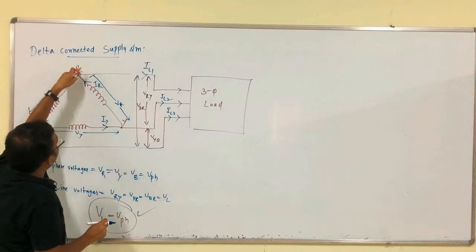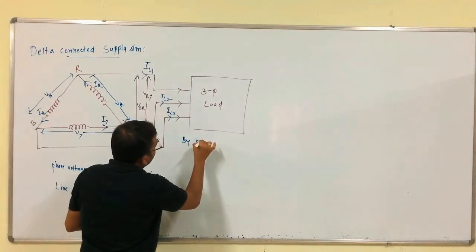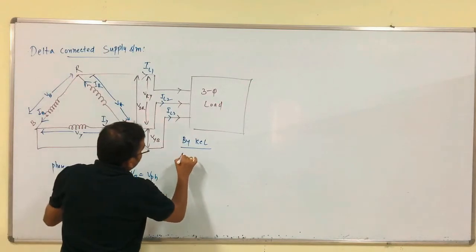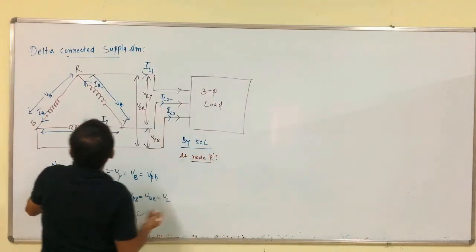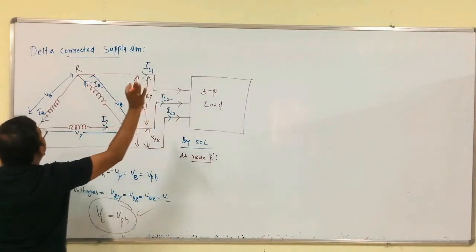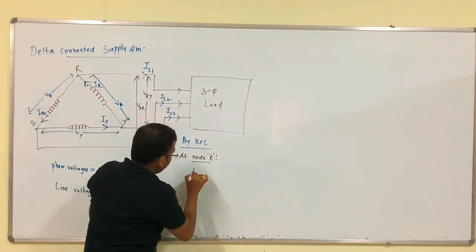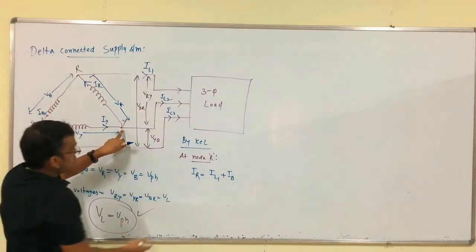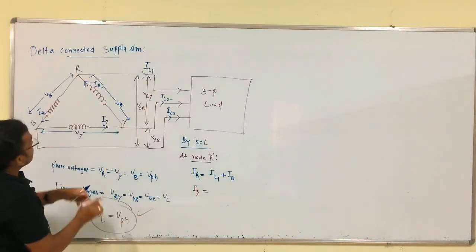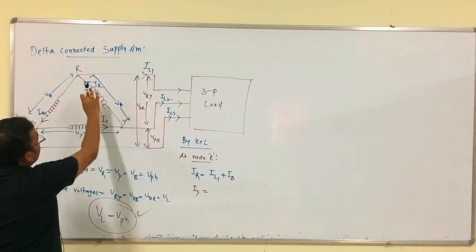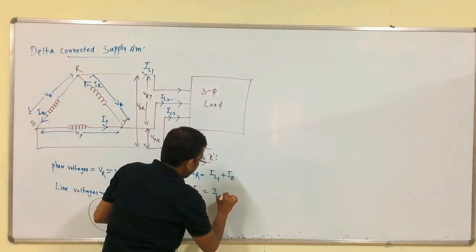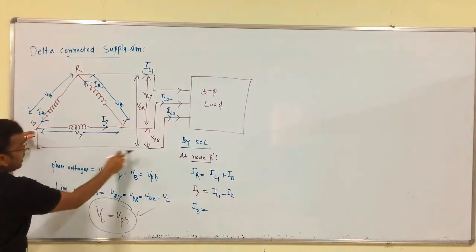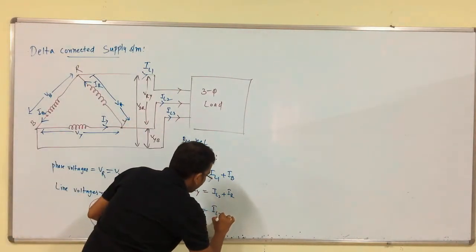We have nodes R, Y, and B. Applying KCL at node R: incoming current is I_R, outgoing currents are I_L1 and I_B. At node Y: I_Y is incoming, I_R and I_L2 are outgoing. At node B: I_B is incoming, I_Y and I_L3 are outgoing.